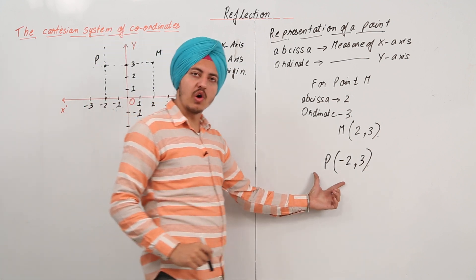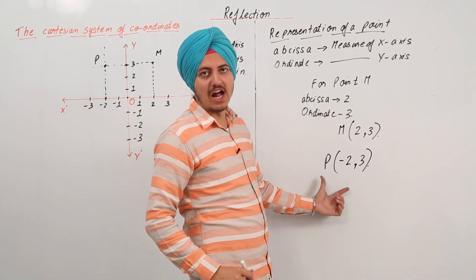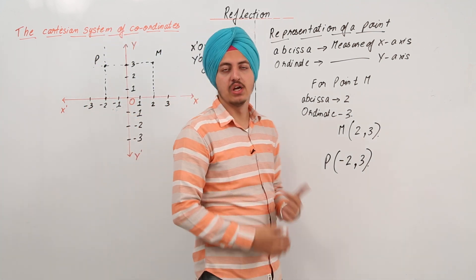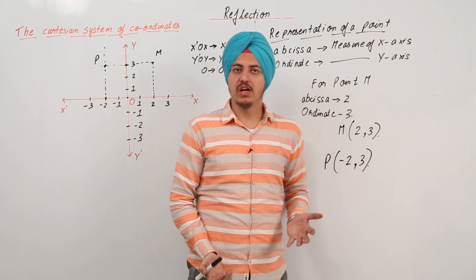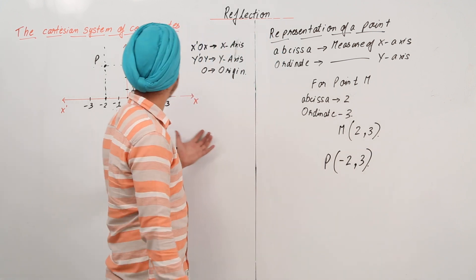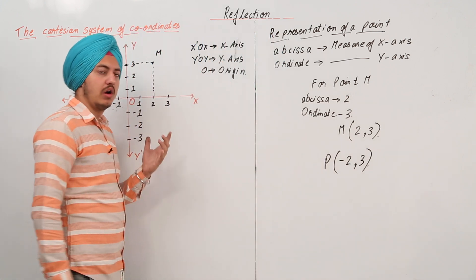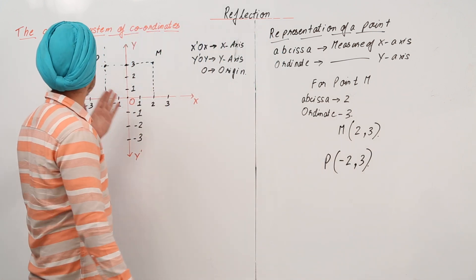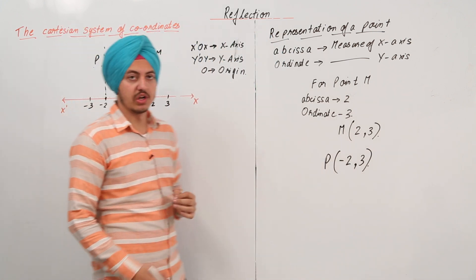These are called the coordinates of that point, and that is the basic idea of the Cartesian system of coordinates.